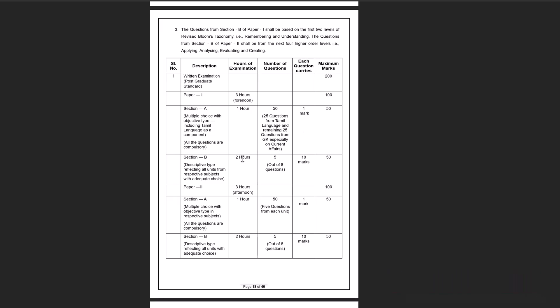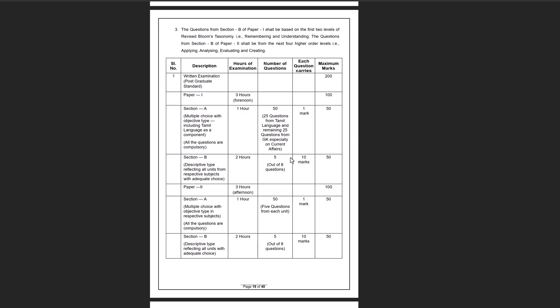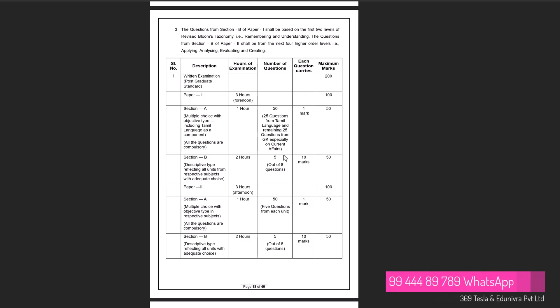We will complete it in all materials and short coffee materials. Descriptive type is the same exam. Out of 8 questions, you have to answer 5 questions. 1 question is 10 marks, so 5 questions is 50 marks. These are 3-hour exams. Descriptive type is very important — 8 questions, 8 units. You can see all of them. The paper is complete.